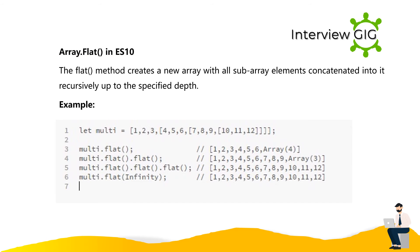Array.flat in ES10: The flat method creates a new array with all subarray elements concatenated into it recursively up to the specified depth. Example: let multi = [1, 2, 3, [4, 5, 6, [7, 8, 9, [10, 11, 12]]]]; multi.flat() returns [1, 2, 3, 4, 5, 6, [7, 8, 9, [10, 11, 12]]]; multi.flat().flat() returns [1, 2, 3, 4, 5, 6, 7, 8, 9, [10, 11, 12]].